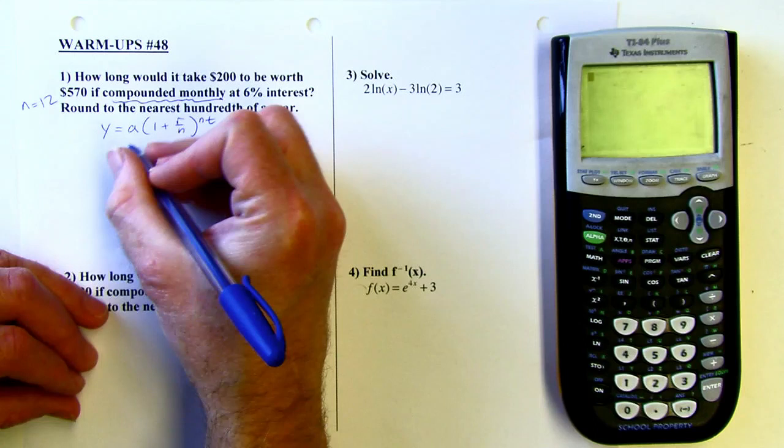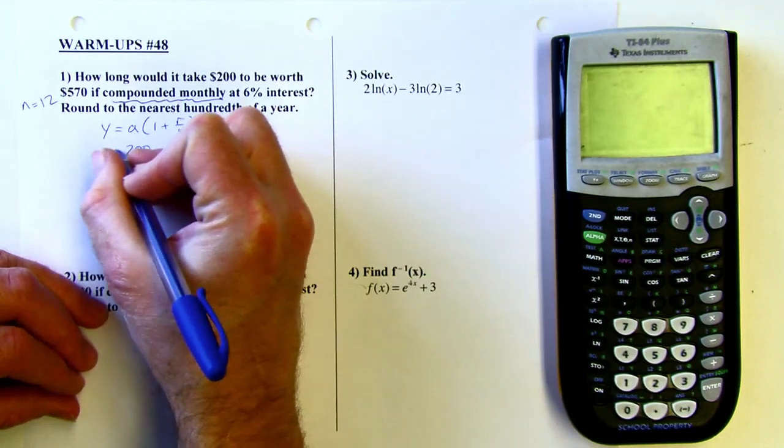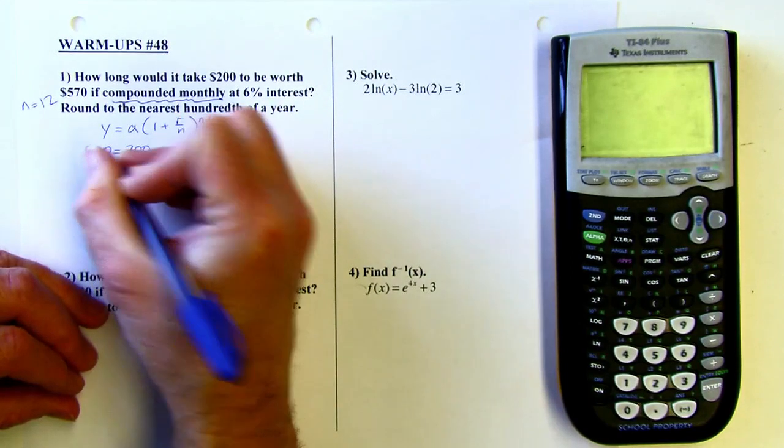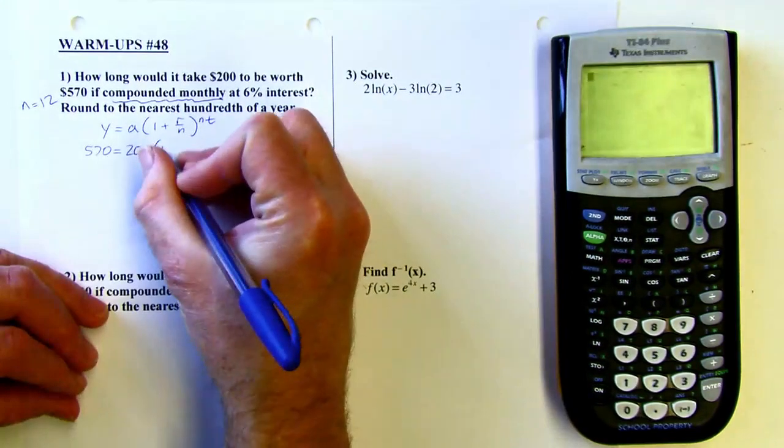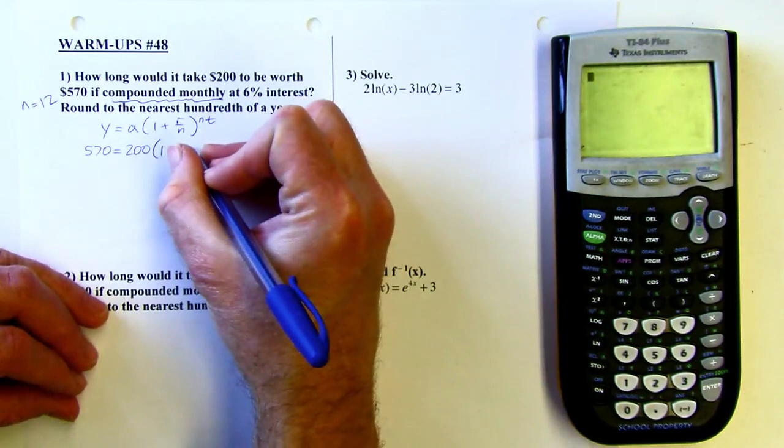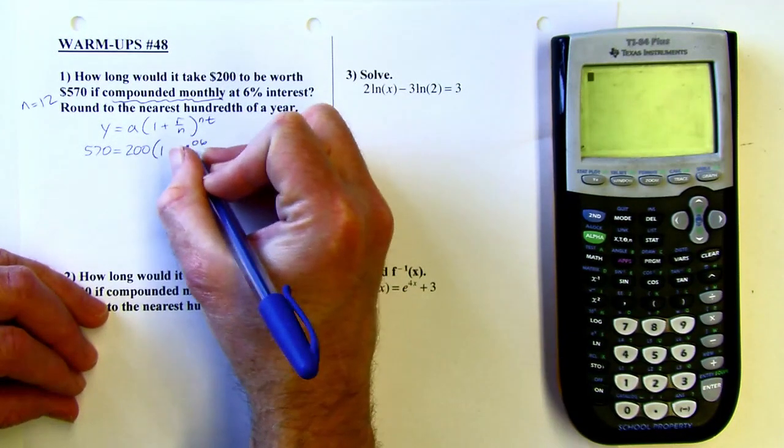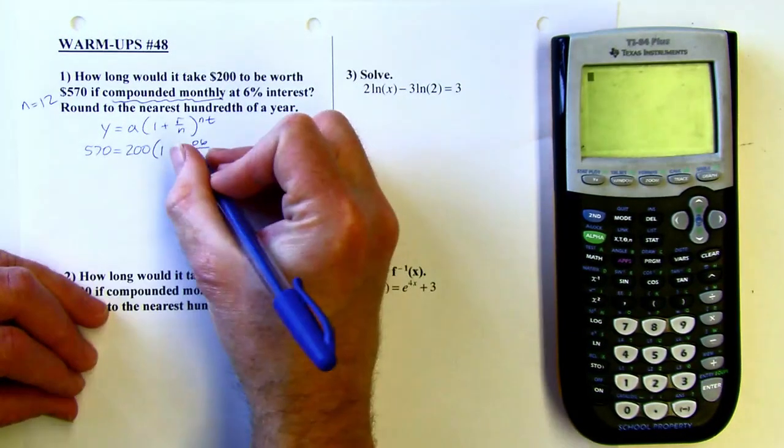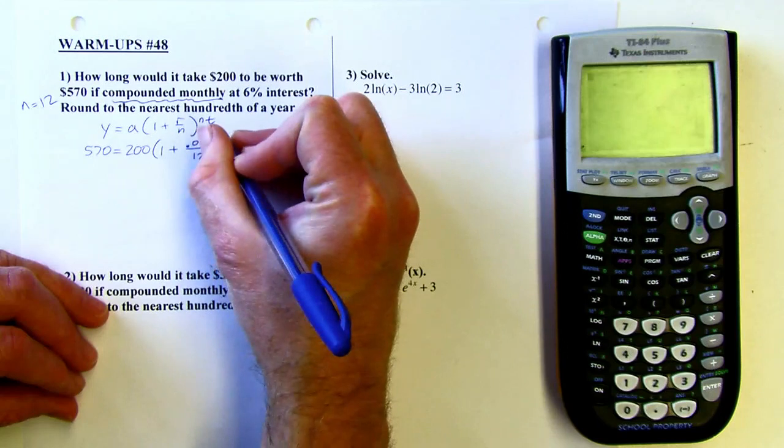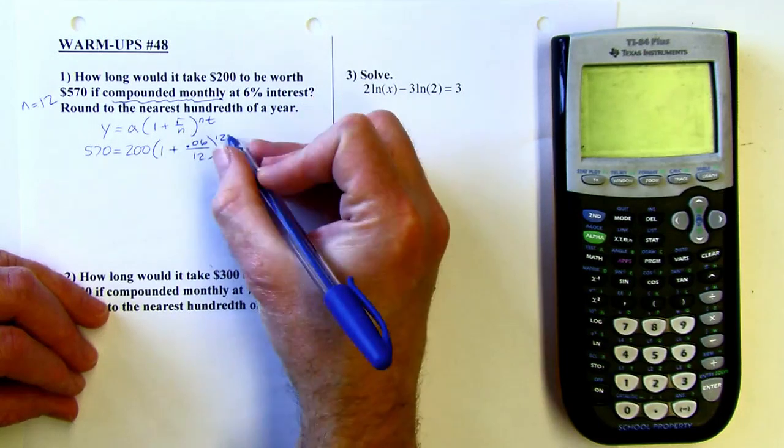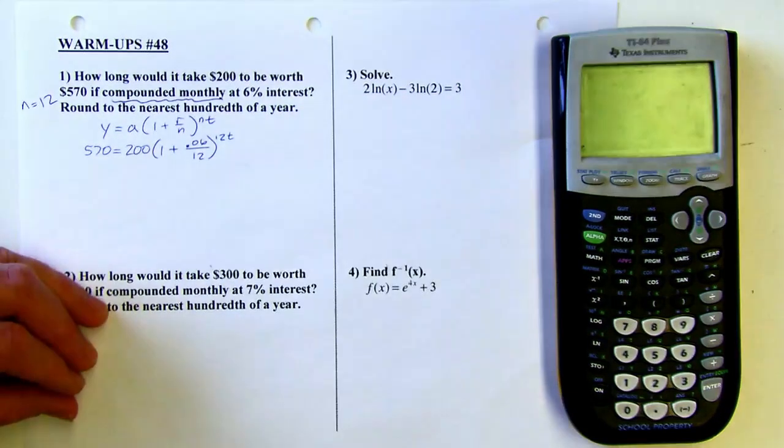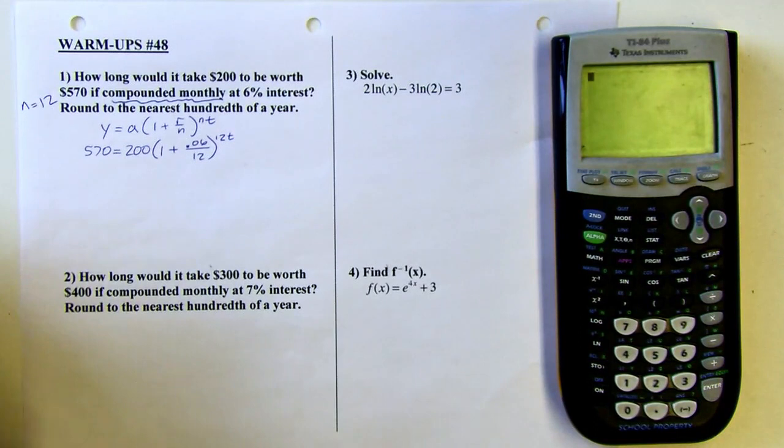A is my starting amount, so that's going to be $200. $570 is the finishing amount. That goes in the y position. The rate is 6%. Don't forget to write that as a decimal, so 0.06. My n is 12, so there's a 12 down there. There's also a 12 up here. What we don't know is the time, so I'll leave that as t. So we're trying to solve this for t.